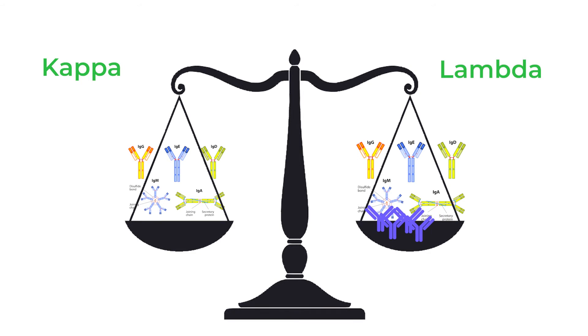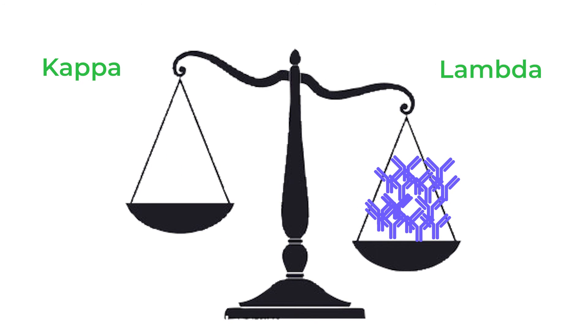Normally, there is a small amount of these light chains in circulation, usually just a couple of milligrams per deciliter of serum. But often when people have myeloma, one or the other of those particular light chains is quite elevated, and that can help signal that a person has myeloma.